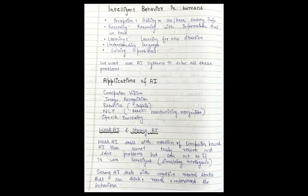Now we have weak AI and strong AI. Weak AI deals with the creation of computer-based AI that cannot truly reason and solve problems. It is not guaranteed to solve your problem, but it can act as if it were intelligent - basically a kind of device that simulates intelligence. Strong AI deals with cognitive mental status that can think, reason, and understand behavior.